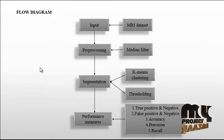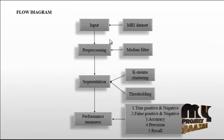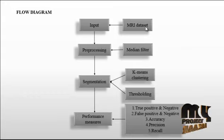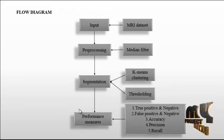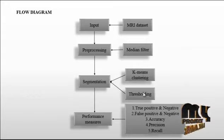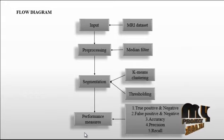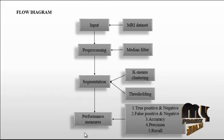Let us discuss the flow diagram of the process. This is the overall flow diagram. First, we take an input image from the MRA dataset, then perform the pre-processing step using the median filter. In the segmentation step, we use two types of segmentation: k-means clustering and thresholding. For performance measurement, we calculate true positive, true negative, false positive, false negative, accuracy, precision, and recall.